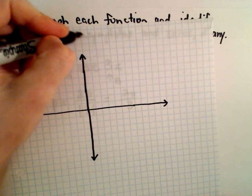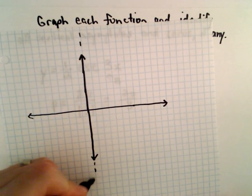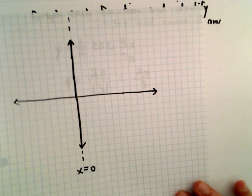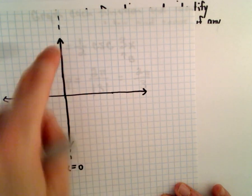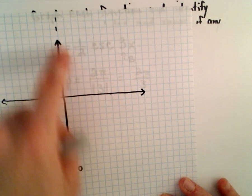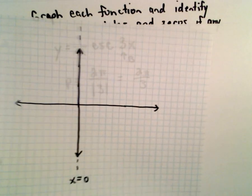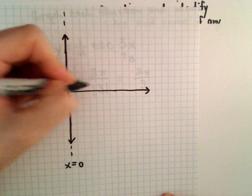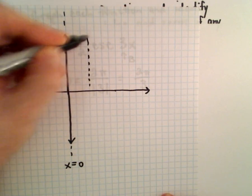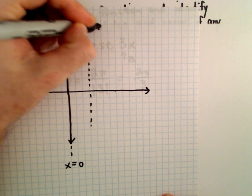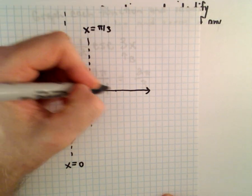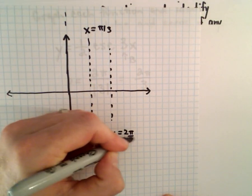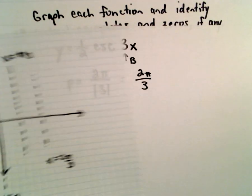Cosecant of x normally has an asymptote at x equals 0, and this one certainly still does. Now, as you travel a distance of 2 pi over 3, we have one portion up and one portion down. So one of our vertical asymptotes is going to occur at x equals pi over 3. And if we move over to x equals 2 pi over 3, that'll give us another vertical asymptote.